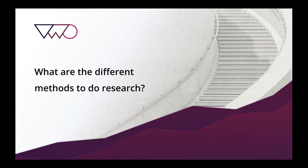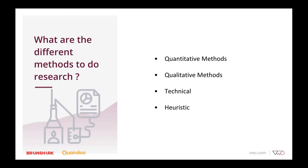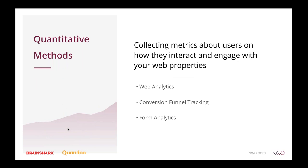First, we will discuss the various research methods available in the market. Broadly, research is divided into four phases: quantitative methods, qualitative methods, technical, and heuristic methods. Most of you are already aware of all these techniques, but for newcomers in the industry, let me take a couple of minutes to explain these categories and different ways to conduct visitor research.